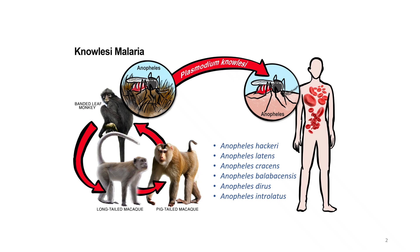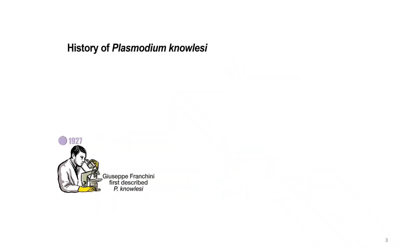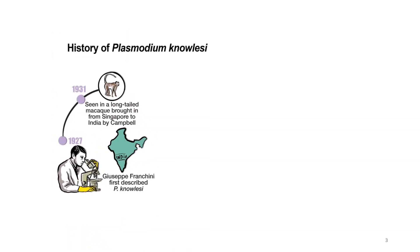Let us take a few minutes to appreciate the history of knowlesi. Plasmodium knowlesi was first described by an Italian physician involved in a study of tropical medicine in 1927. It was first isolated and studied in detail at the Calcutta School of Tropical Medicine in India in early 1931, from a long-tail macaque that had been imported from Singapore by Campbell. Knowing that malaria was the research focus of Knowles and Das Gupta, he then handed the macaque to them for a series of experiments among its natural hosts.